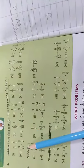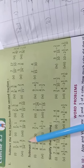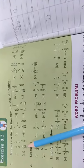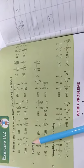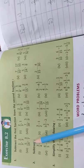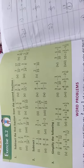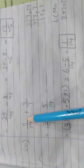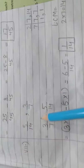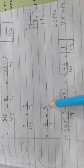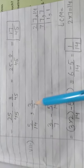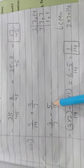Question number 7 involves unlike fractions, meaning the denominators are different. When denominators are different, whether adding or subtracting, we need to find the LCM first. Part 7 has fractions 5/14 and 3/7. Since we subtract the first from the second, we write 3/7 minus 5/14.